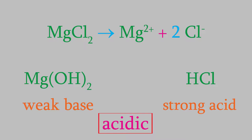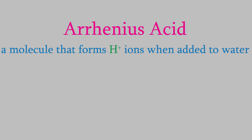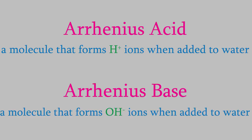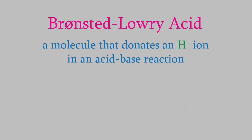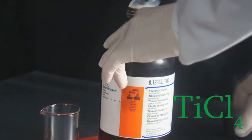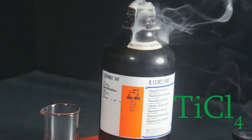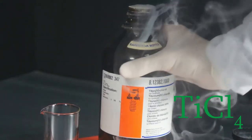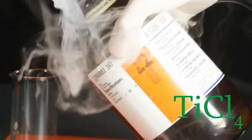Way back in video 19, we saw two different definitions of what exactly an acid or a base is. The first was the Arrhenius definition, in which an acid is any compound that produces hydrogen ions in water, and a base is a compound that produces hydroxide ions. We saw that that definition leaves out quite a few compounds that we know are actually acids and bases, so a better definition was needed. That was the Brønsted-Lowry definition, which said that an acid is a compound that donates a hydrogen ion in an acid-base reaction, and a base is a compound that accepts the hydrogen ion. But it turns out that this definition also leaves out a lot of different acids and bases.